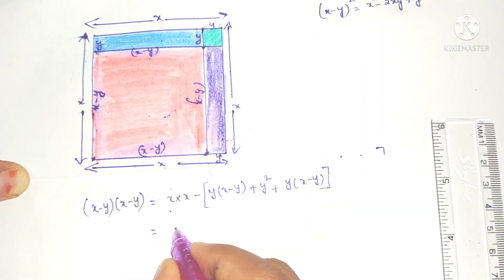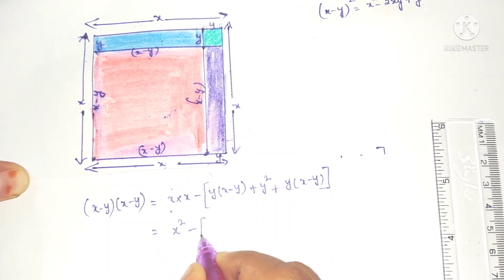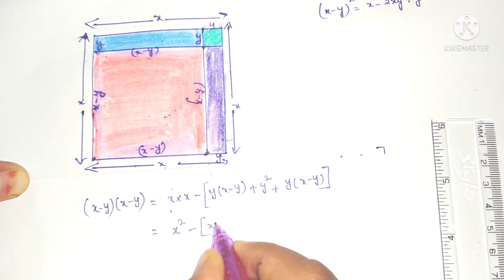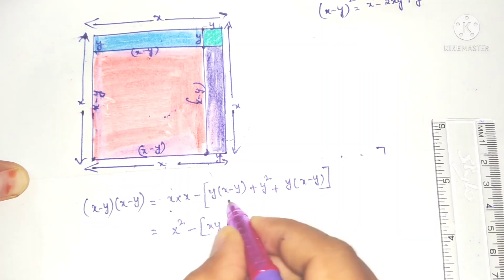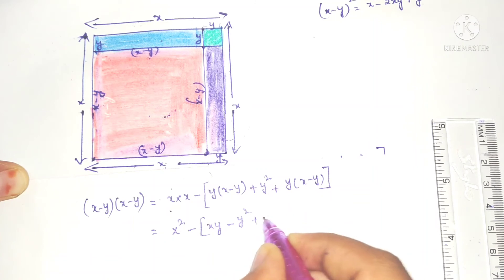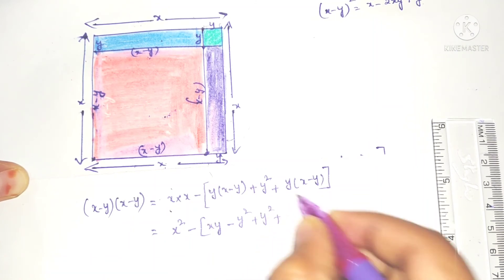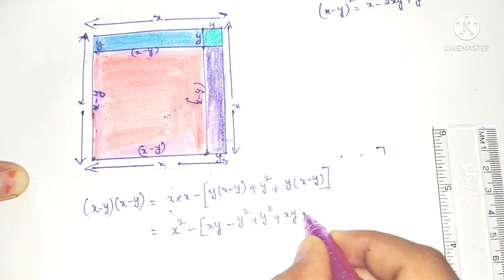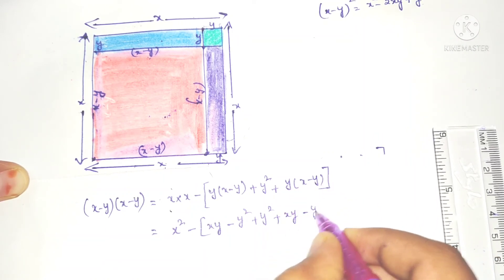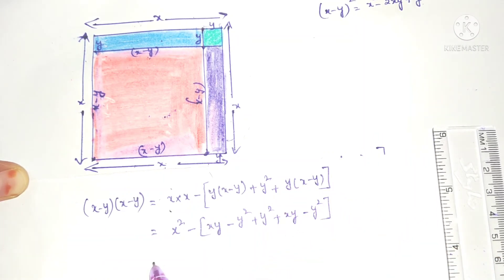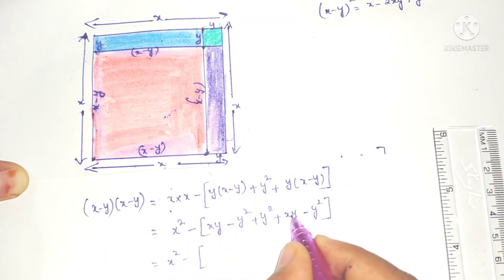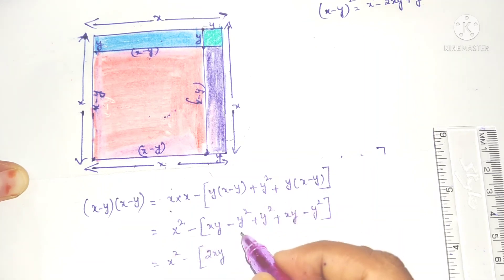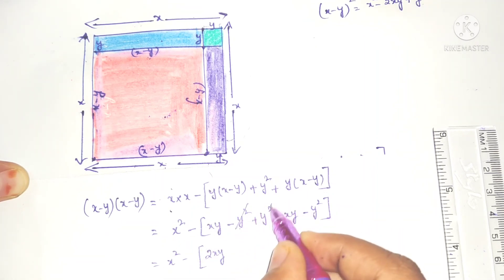So now: x into x is x squared, minus y into x is xy (writing in alphabetical order), minus y into y is y squared, plus y squared, plus y into x is xy, and minus y into y is y squared. So now we have xy plus xy which is 2xy.